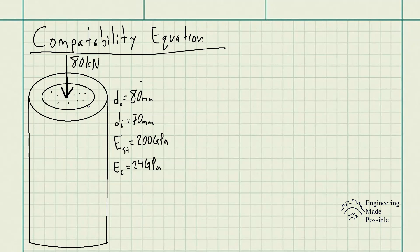The forces will be distributed depending on the strengths of the materials, and this is where we use the compatibility equation. The stress in each material is the external load divided by the cross-sectional area.